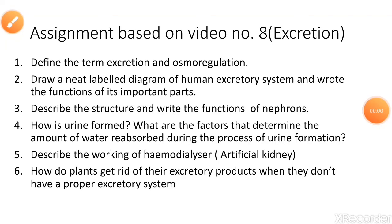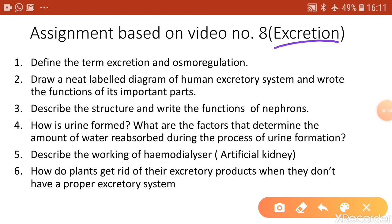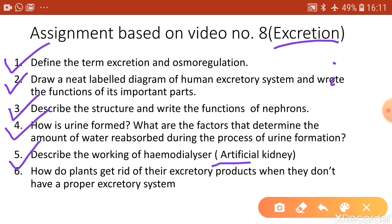For your assignment, to be done in your biology copies, answer the following questions: Define excretion and osmoregulation. Draw a neat labeled diagram of the human excretory system and write the functions of its important parts. Describe the structure and functions of nephrons. How is urine formed, and what factors determine the amount of water reabsorbed? Describe the working of the hemodialyzer or artificial kidney. How do plants get rid of excretory products without a proper excretory system?